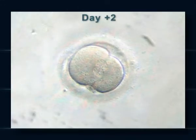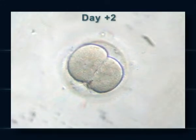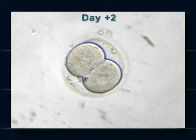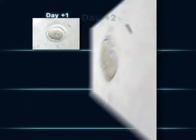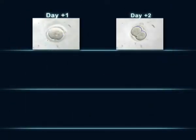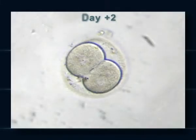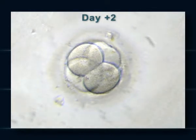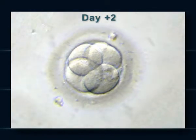Two days after puncture, the embryo divides itself and contains two cells with one nucleus per cell, which in turn starts to divide into an embryo of four cells if its development is optimal.